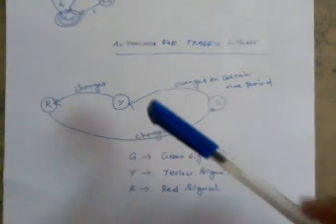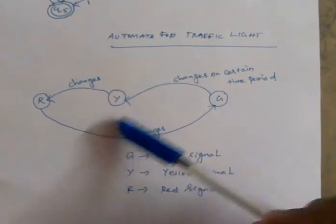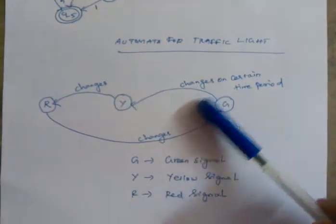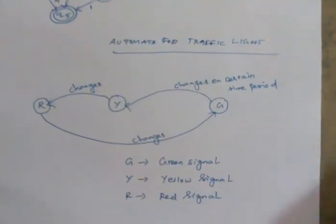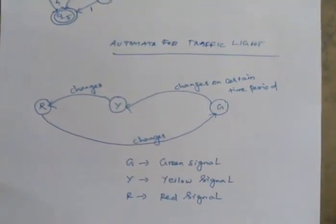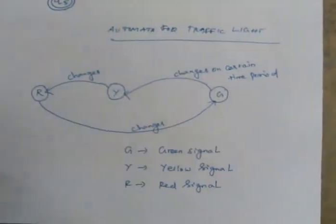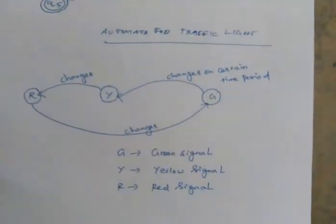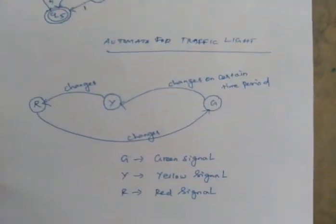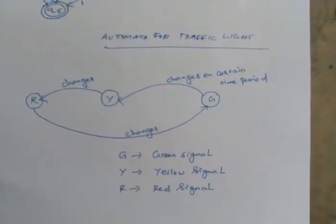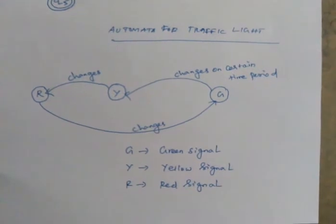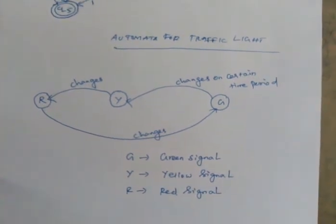This is the starting state or ending state. This is the changing period. This is the automatic model for a traffic light. Thank you.